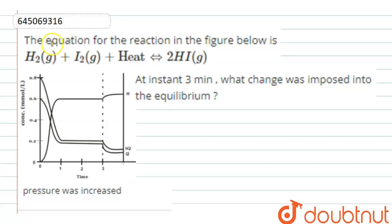Dear students, the equation for the reaction in the figure below is H2 plus I2 plus heat gives 2HI. Now this is the graph given. At instant 3 minutes, what change was imposed into the equilibrium?